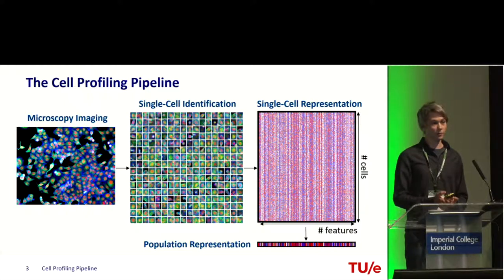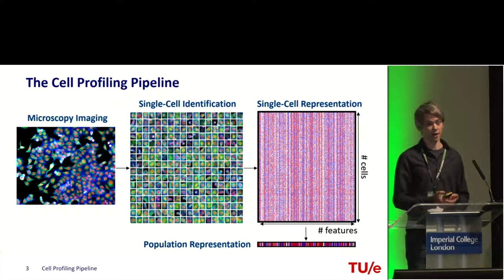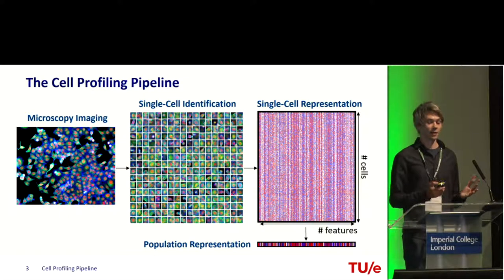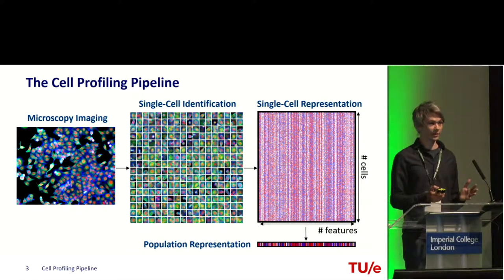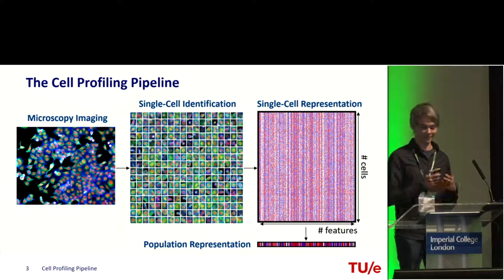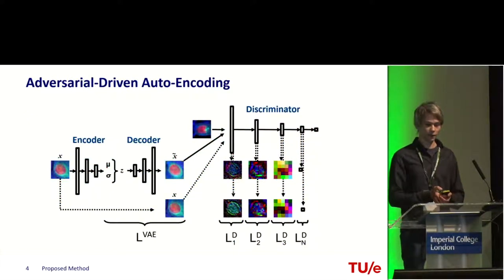A popular approach for this task is a cell profiling pipeline. The method consists in first extracting all the single cells that are available in the datasets. Then, the second step is to generate a profile that captures the variations for each of those extracted patches. And finally, to aggregate all this information in order to obtain a profile at the population level that can then be compared across different populations.